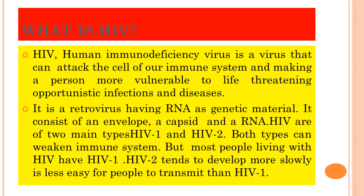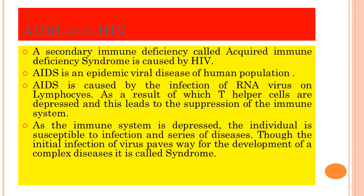HIV is a retrovirus having RNA as genetic material — it is not a DNA virus, it is an RNA virus. It consists of an envelope, a capsid, and RNA as genetic material. HIV is of two main types: HIV-1 and HIV-2. Both types can weaken the immune system, but most people living with HIV have HIV-1. HIV-2 tends to develop more slowly and is less easily transmitted than HIV-1. HIV can cause acquired immune deficiency syndrome, which is a secondary immune deficiency.